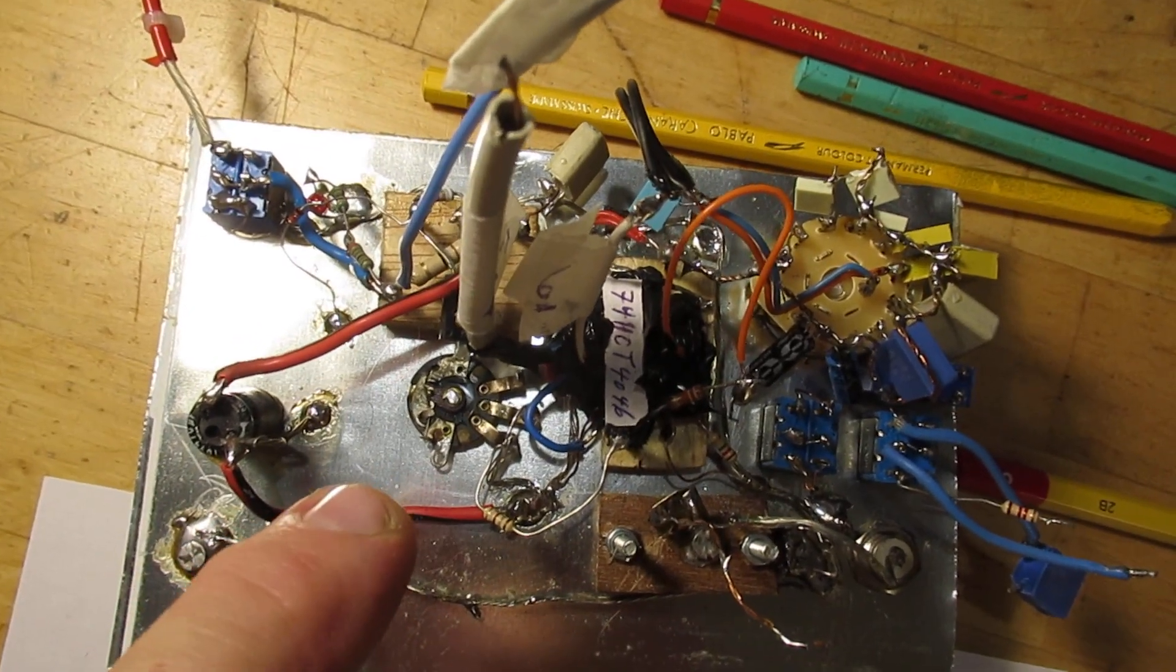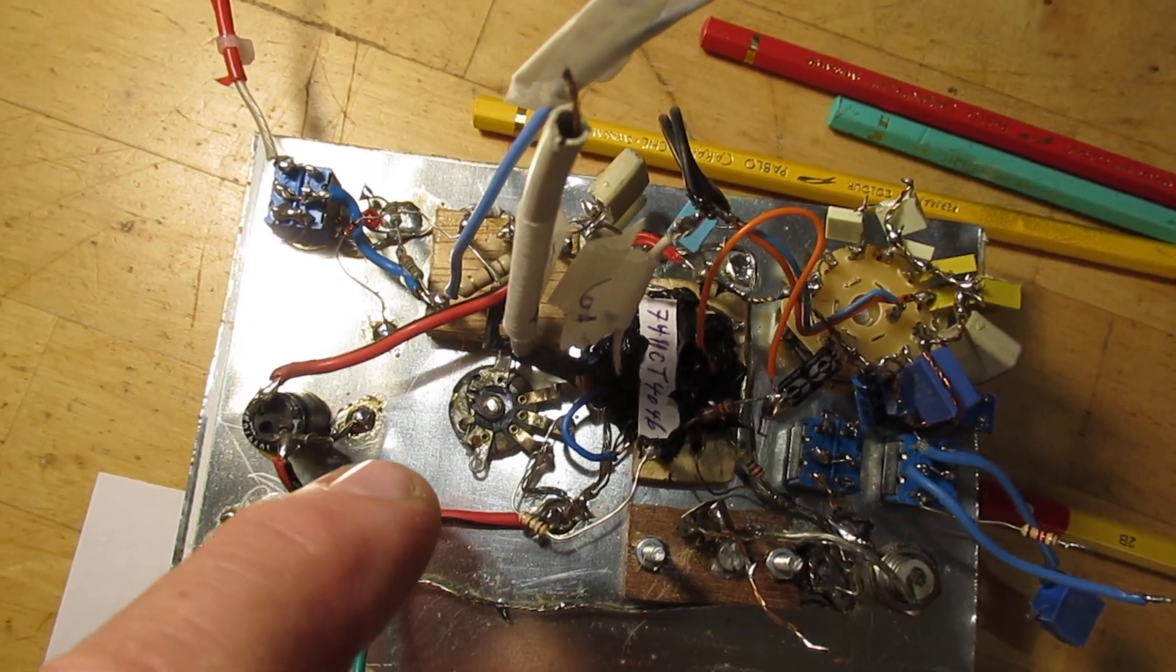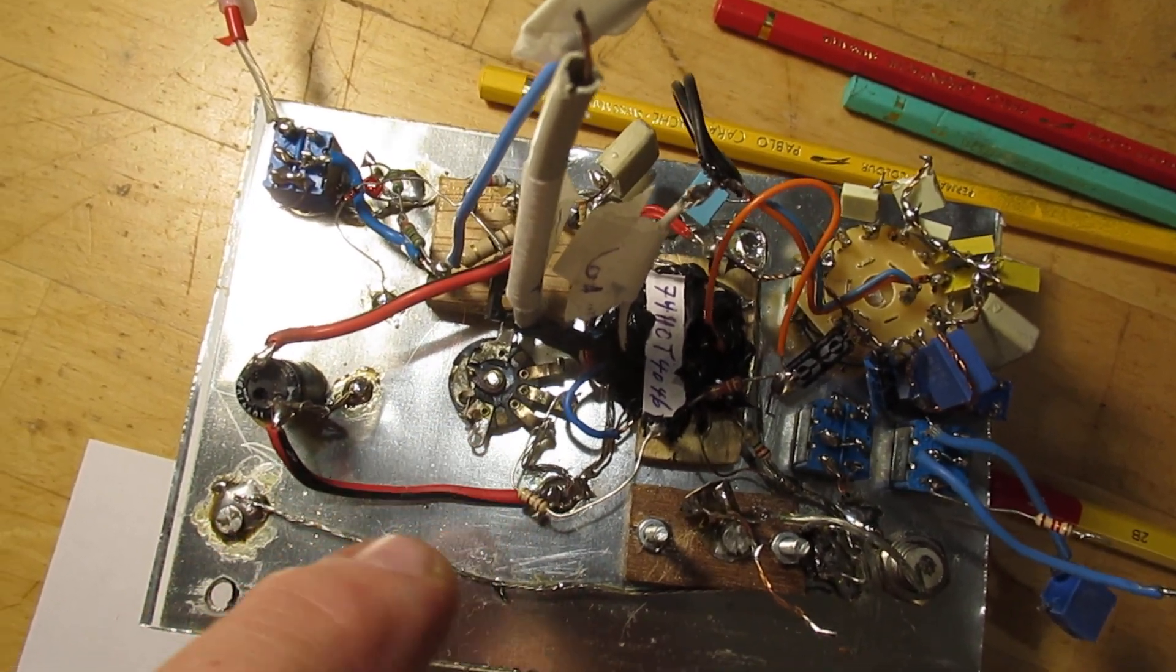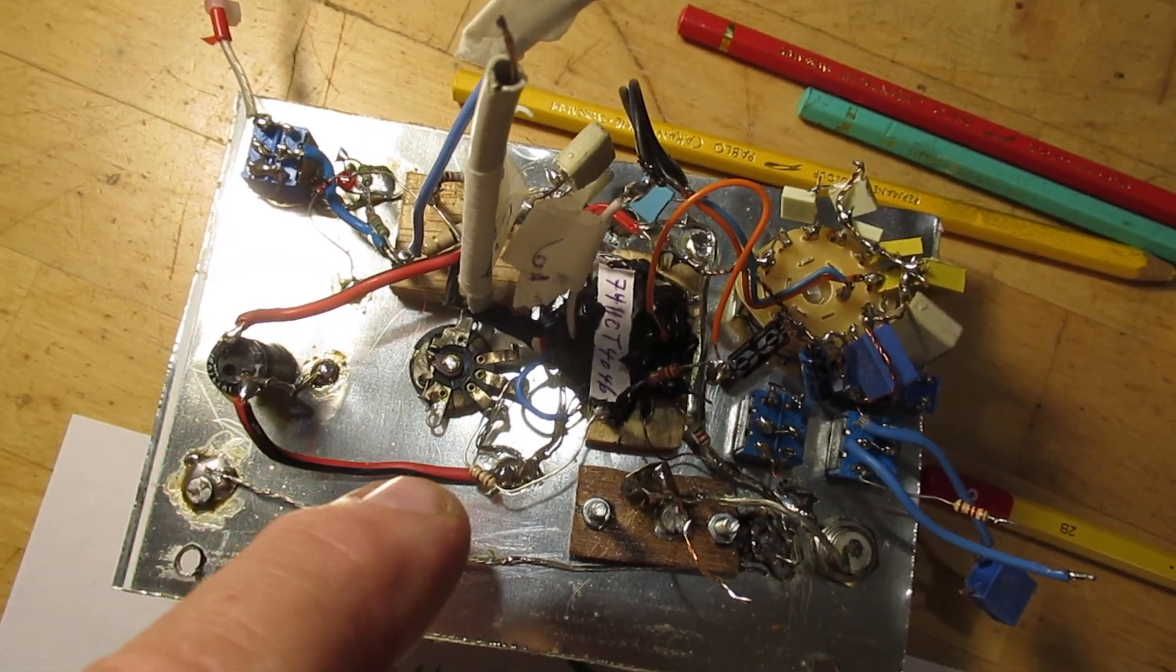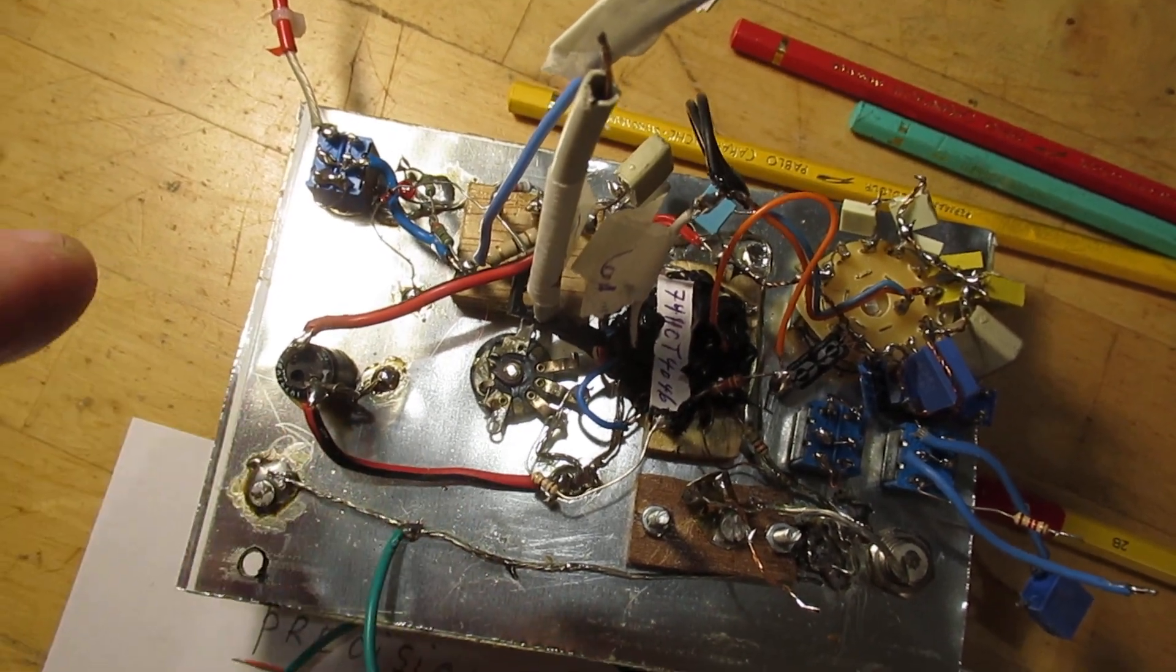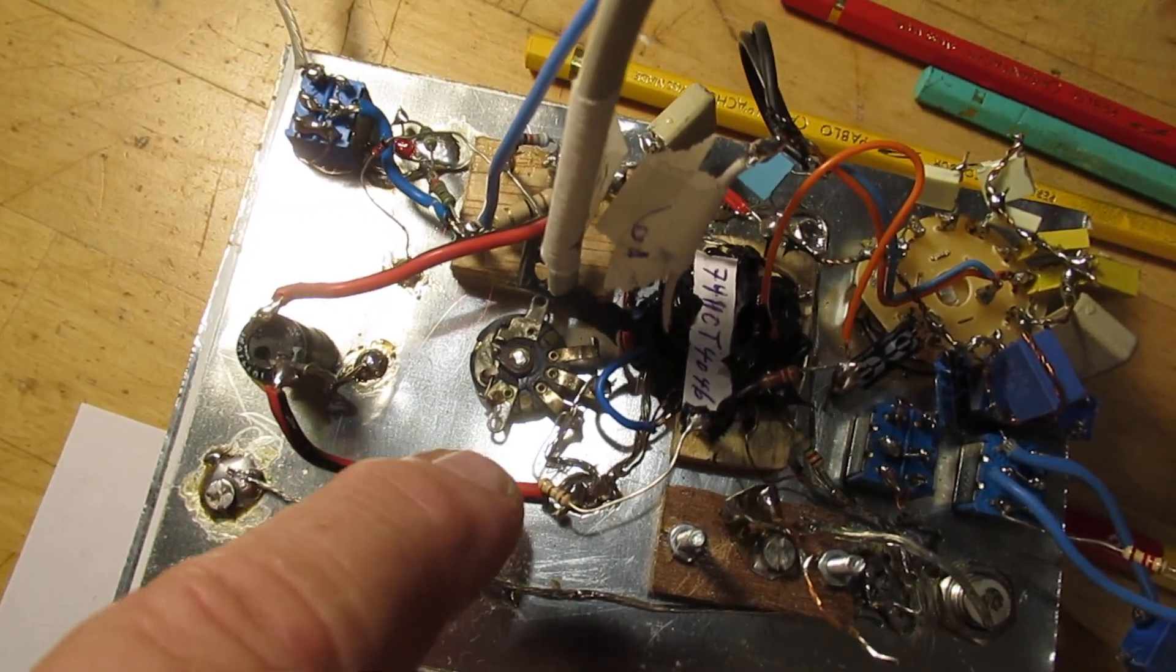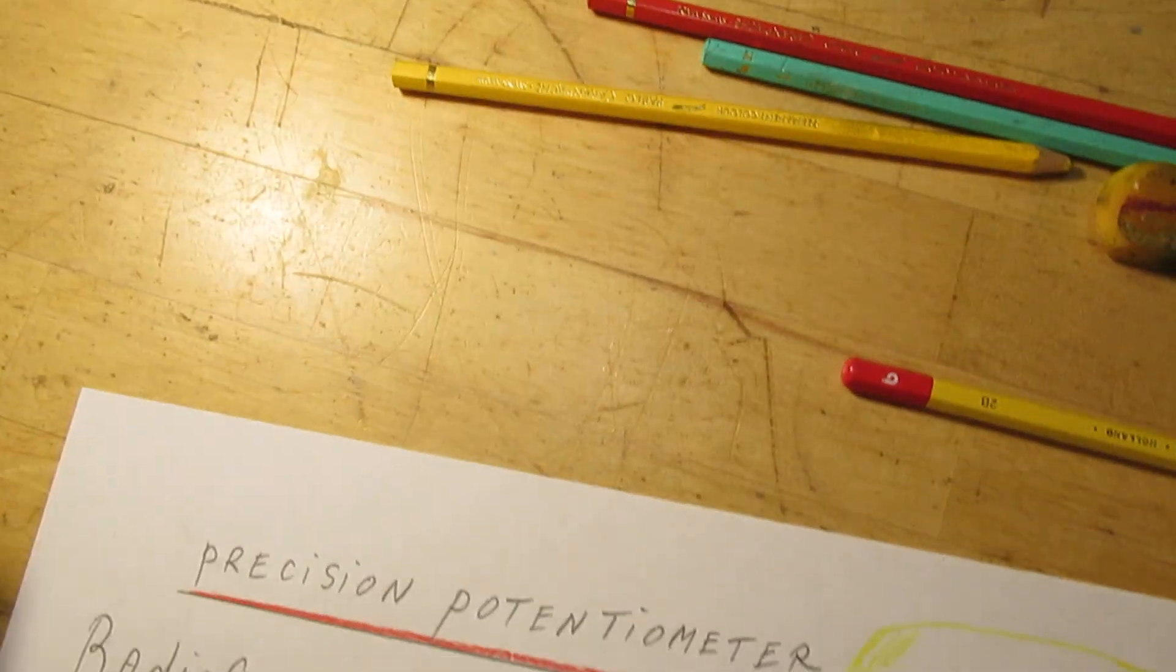that potentiometer does its job, but it does its job very, very coarse. So with a tiny movement on the carbon layer of this potentiometer, the output frequency jumps suddenly to say 2k cycles higher or lower. And that means that I need here a precision potentiometer, and this is the solution for that.